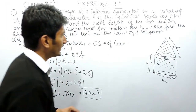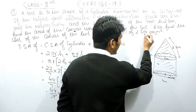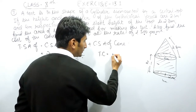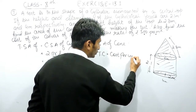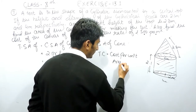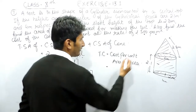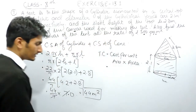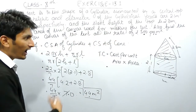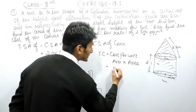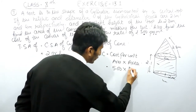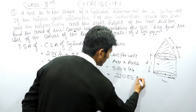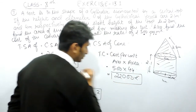Now we find the cost of the canvas. The cost per unit area is 500 rupees per meter square, and the total area is 44 meter square. So the total cost = 500 × 44 = 22,000 rupees.